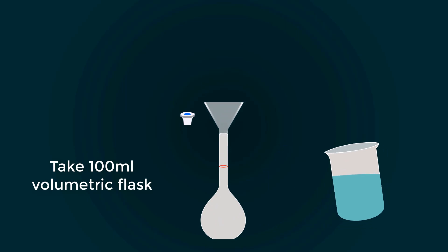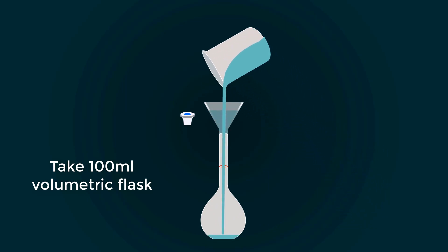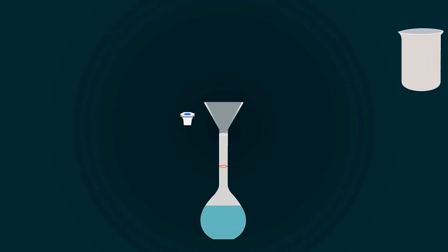Now pour all the solution into the volumetric flask with the help of the funnel. You have to fill the volumetric flask up to the 100 milliliters point. For that, you have to add more distilled water.